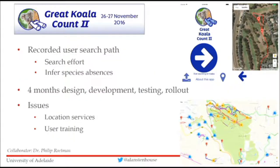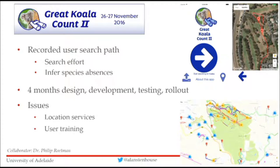The Great Koala Count was done in 2016. The aim was to improve species population modelling compared to the one done in 2012. To improve it, we wanted to record the user search path, which would allow us to accurately determine user search effort, as well as infer species absence data — normally you only get observation data, but absence data is also important. This took about four months from go to woe: design, development, testing, and rollout, with multiple cycles of development and testing.